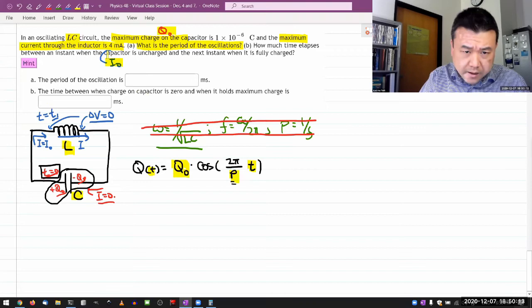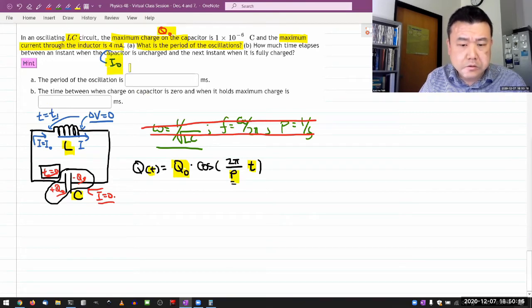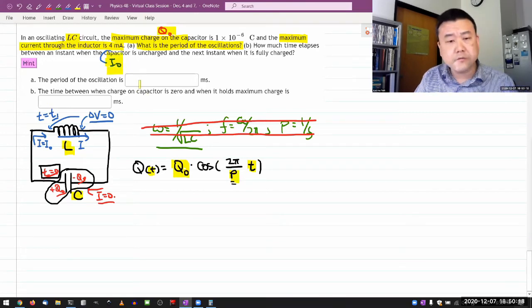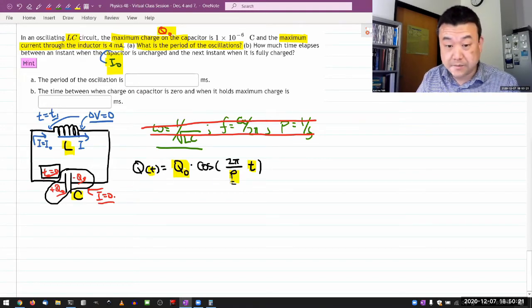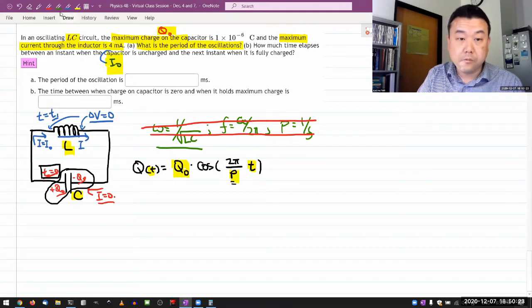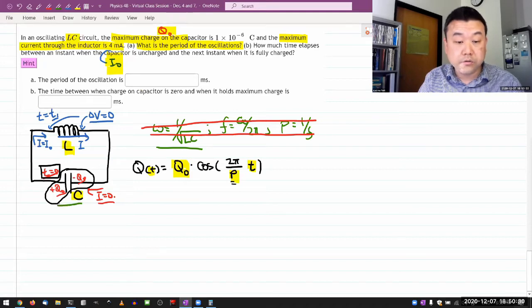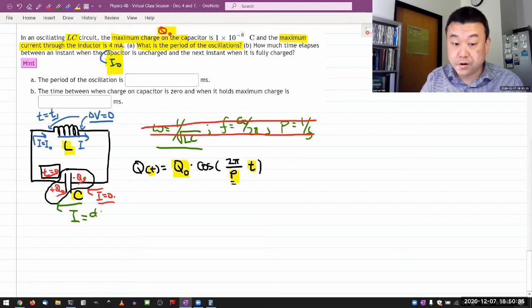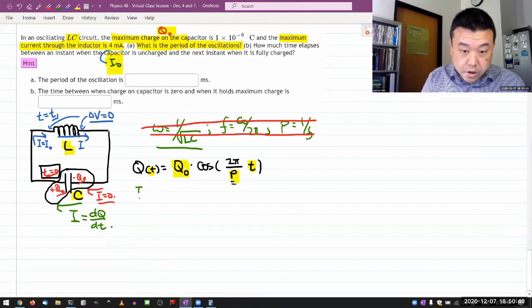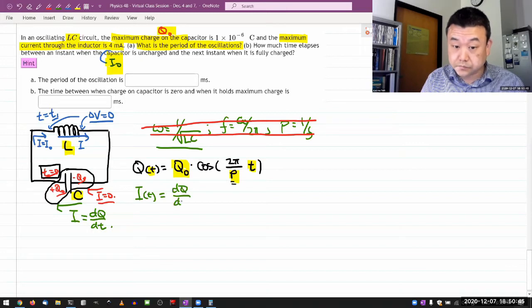The other information I have is the current is given. So let me try to get an expression for current. I could write the exact same expression with I naught, but what I hope you remember by this point is that there's a relationship between the current through a capacitor and the amount of charge on the capacitor, which is the current is dq dt. So my current here as a function of time is going to be dq dt,